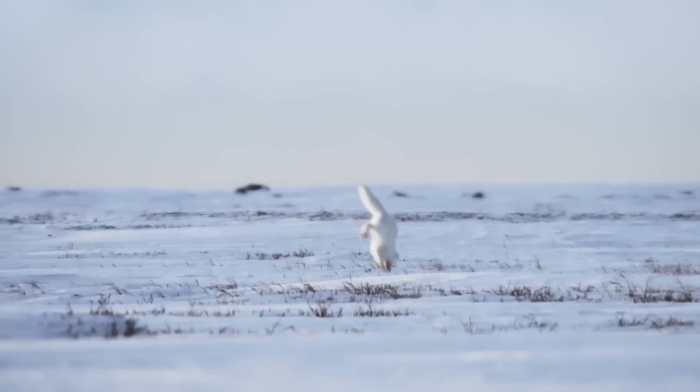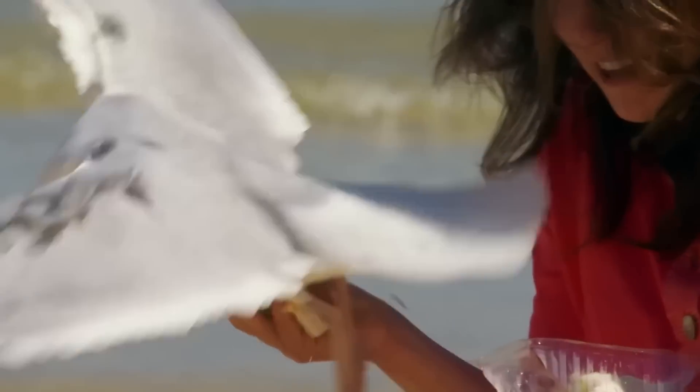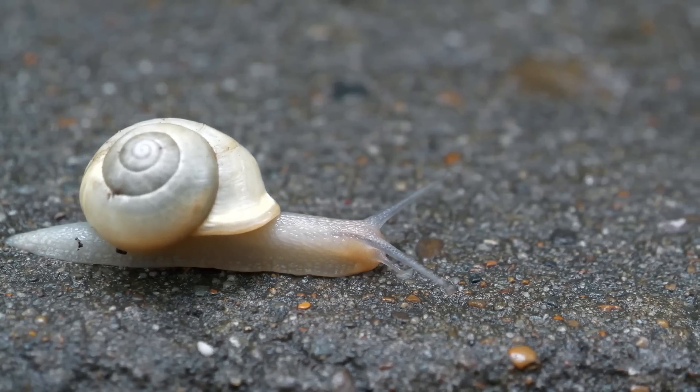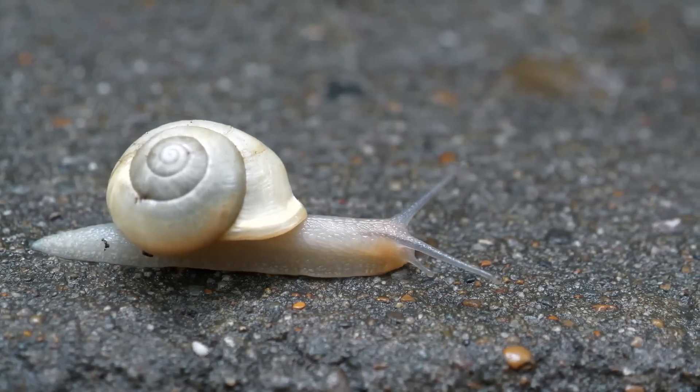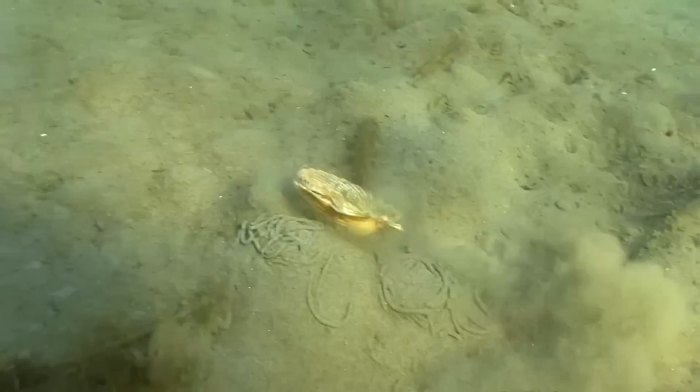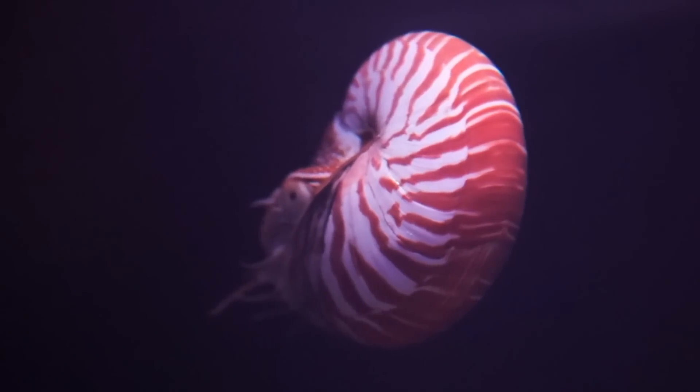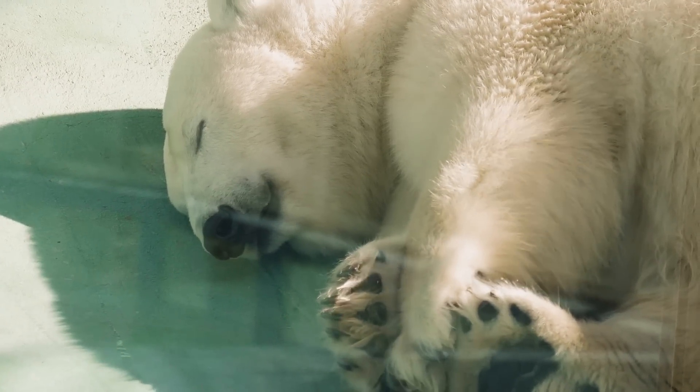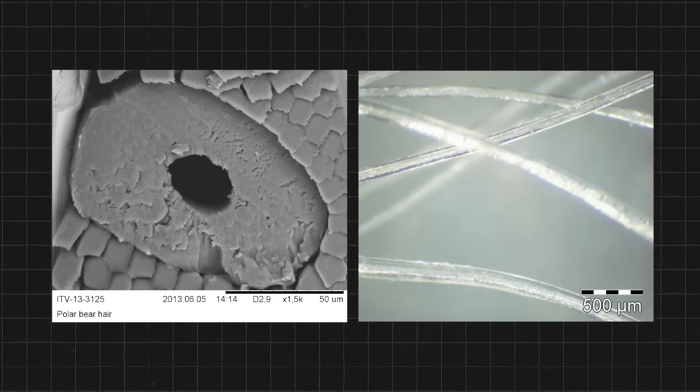White is a tough color for nature to produce. There are a few different approaches that it tries to take. For example, some organisms try to produce white coloration using bio-minerals. The shells of mollusks are often white due to the presence of calcium carbonate that they can produce organically.